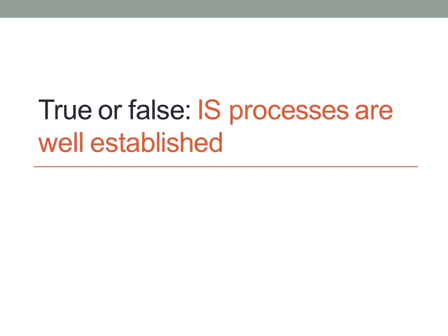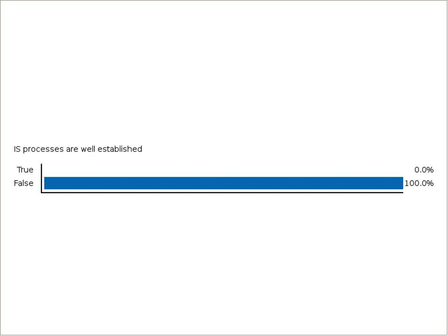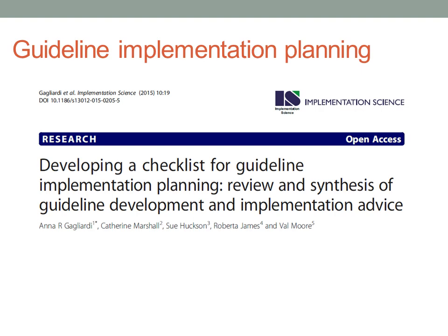Here's another poll. True or false: implementation science processes are well established. Essentially, do we know how to implement guidelines? All of you who answered said we do not really know how to implement guidelines. I would say we know quite a bit about how to implement guidelines, but research shows that guidelines are generally disseminated and not implemented.